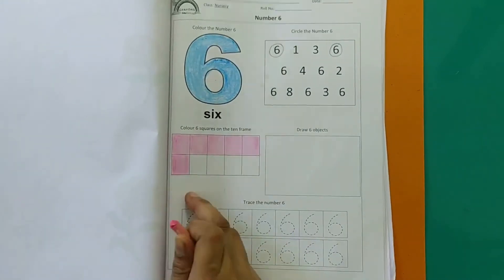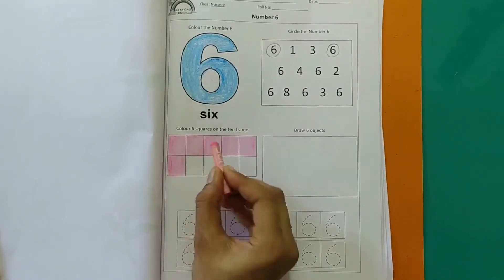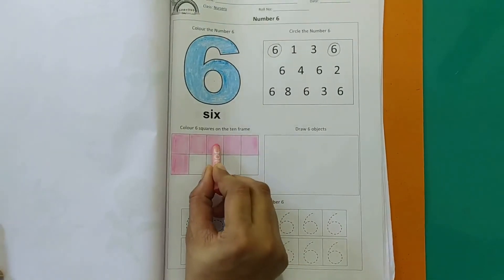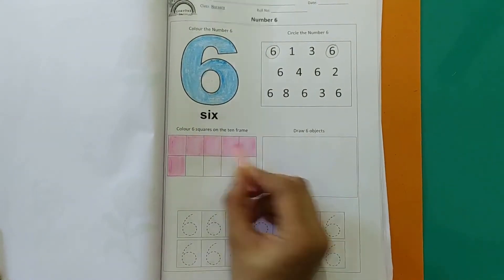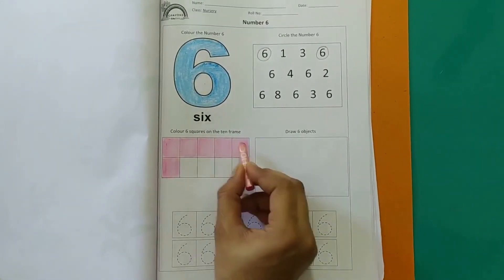So have we colored 6 squares? Let's count and see. 1, 2, 3, 4, 5, 6. Yes we have colored 6 squares.